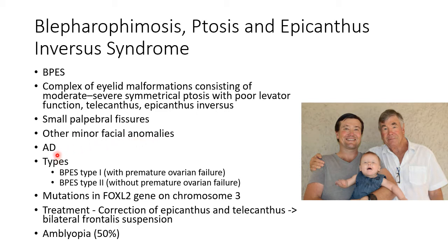BPES is inherited in an autosomal dominant pattern. There are two types: BPES type 1, which is associated with premature ovarian failure, and BPES type 2, in which there is no premature ovarian failure. Both types occur due to mutations in the FOXL2 gene on chromosome 3.